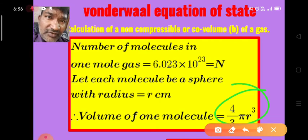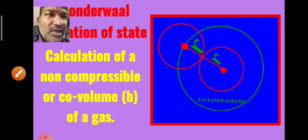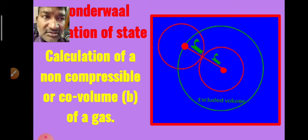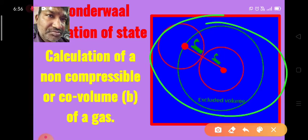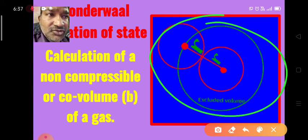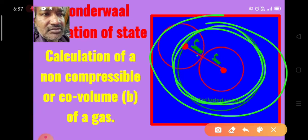At high pressures, gas molecules are brought together and touch one another. In between two touching molecules, no other molecule can enter. Taking a central molecule surrounded by other molecules, we can draw a larger effective sphere of radius 2r. No other molecule can enter and sit inside this effective sphere.